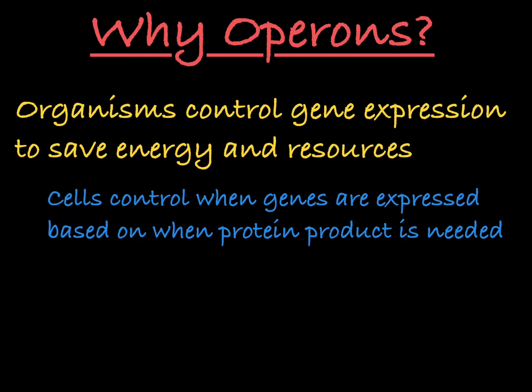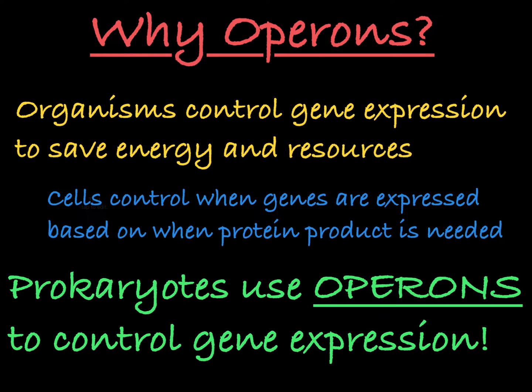Being able to control when genes are expressed based on when their products are needed helps the cell be as efficient as possible. In prokaryotes, one way to control gene expression is through the use of operons.